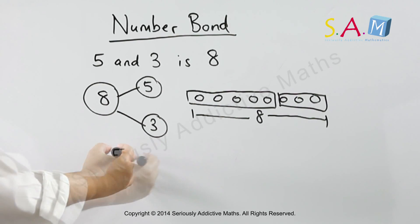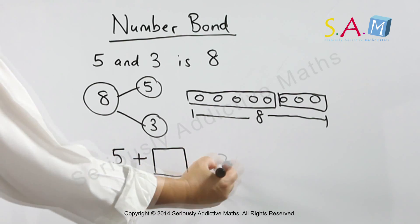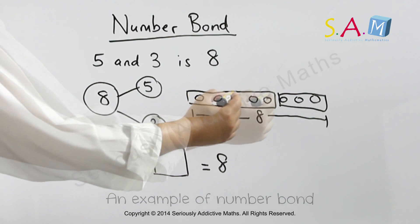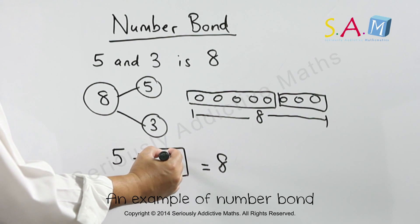An example: 5 plus a number equals 8. So you know the total to be 8. You take out 5 and you know that the missing number must be a 3. So 5 and 3 is 8.